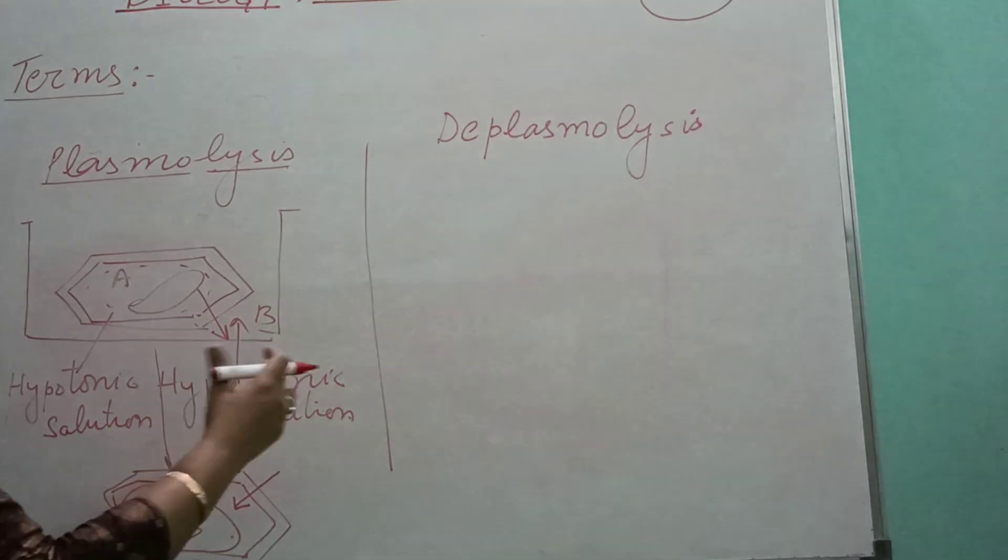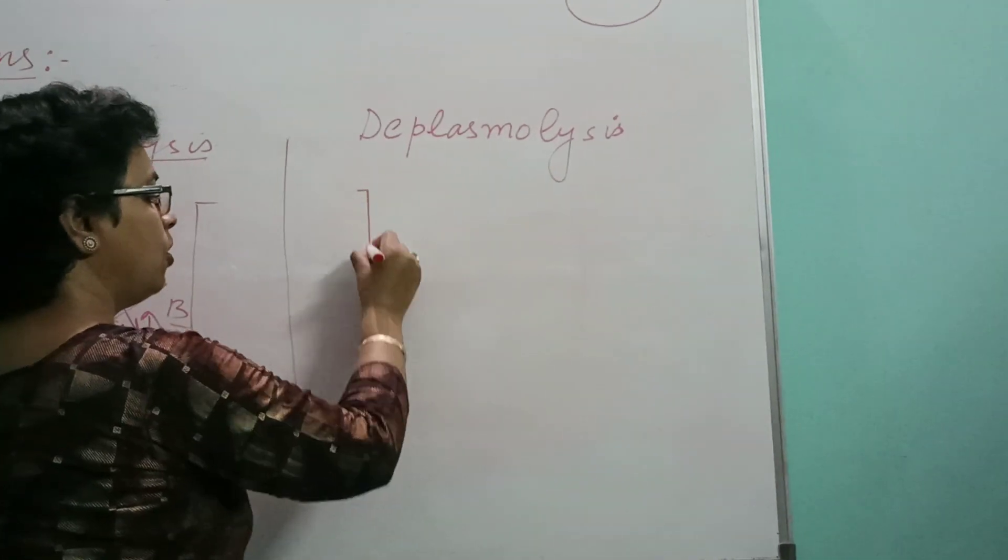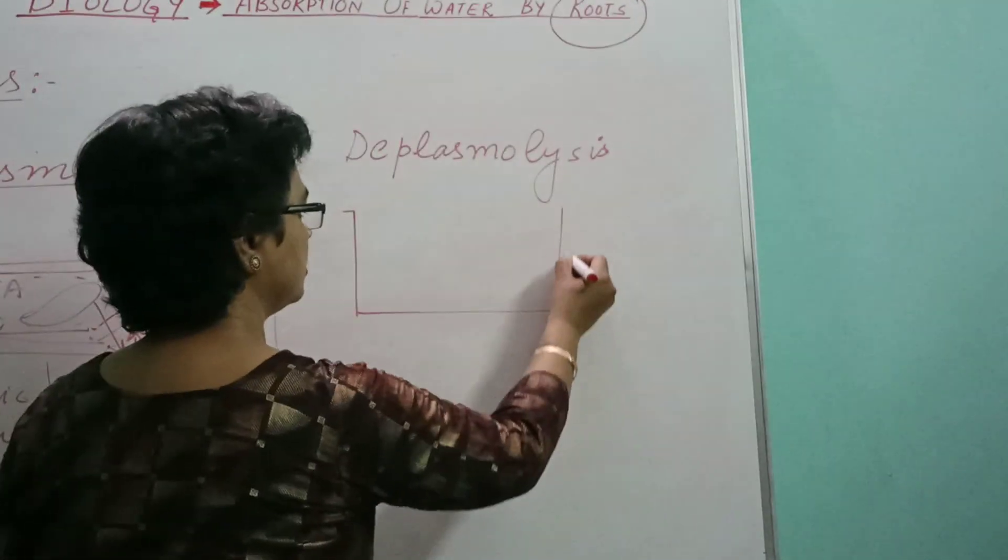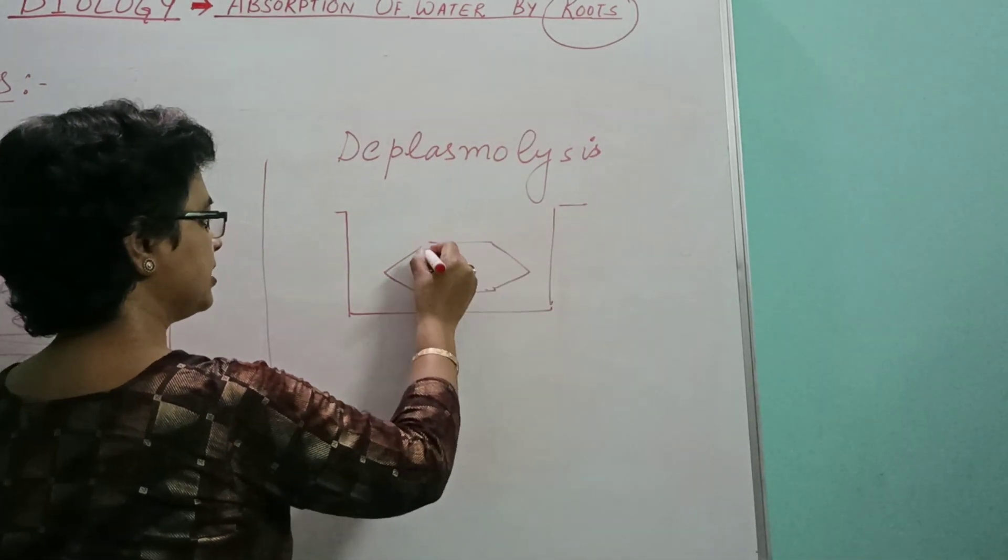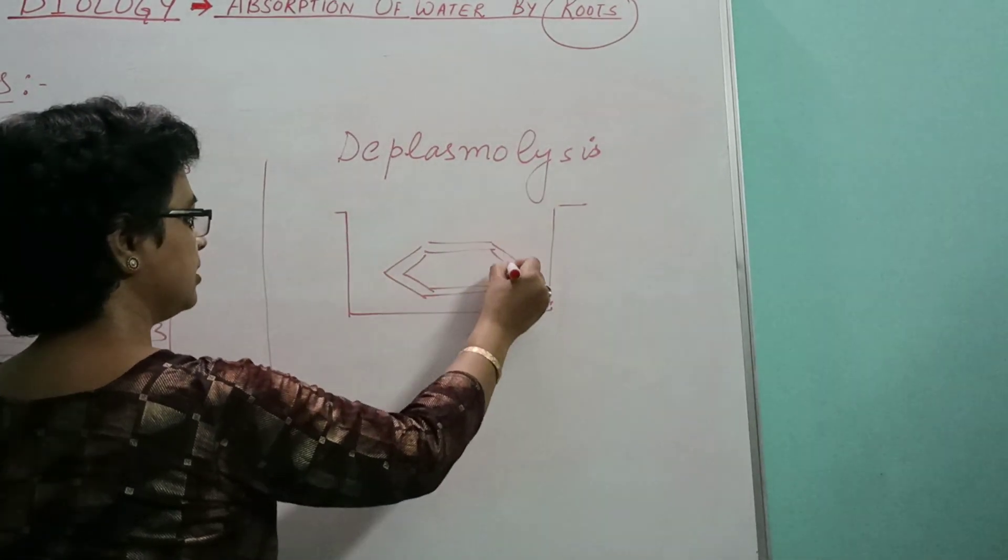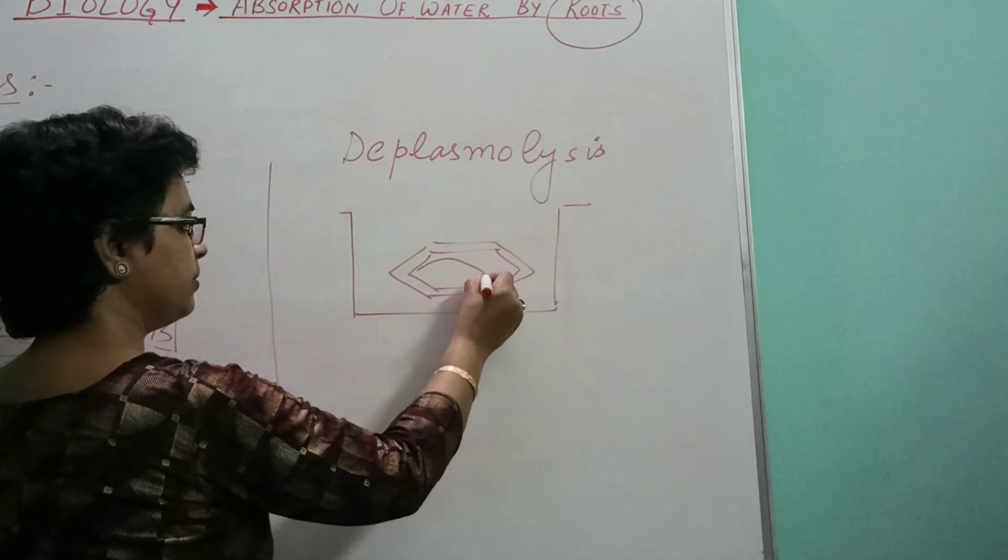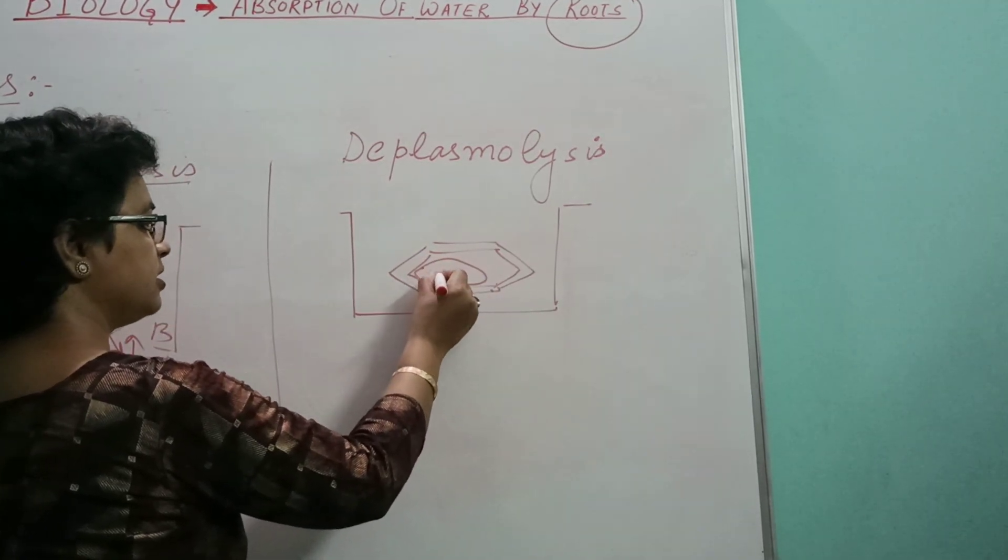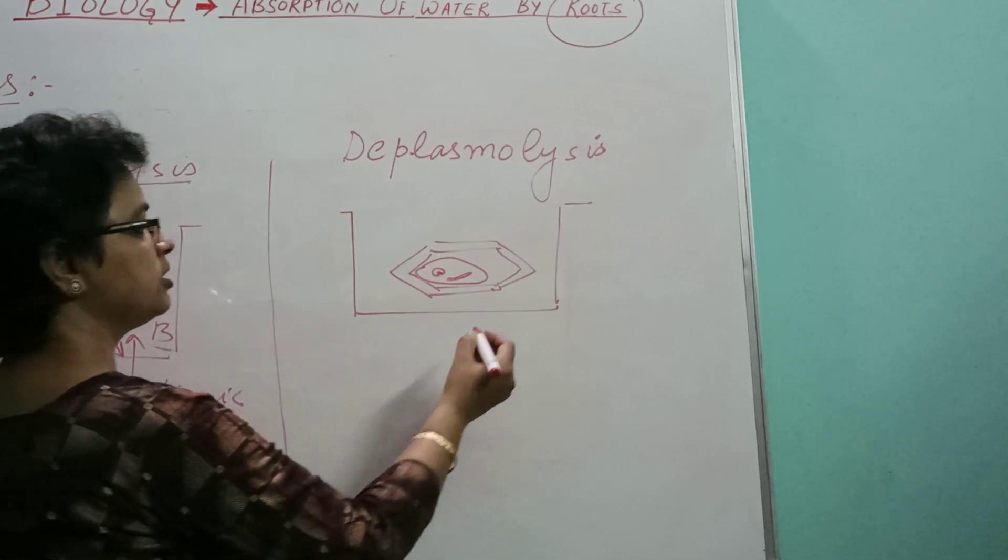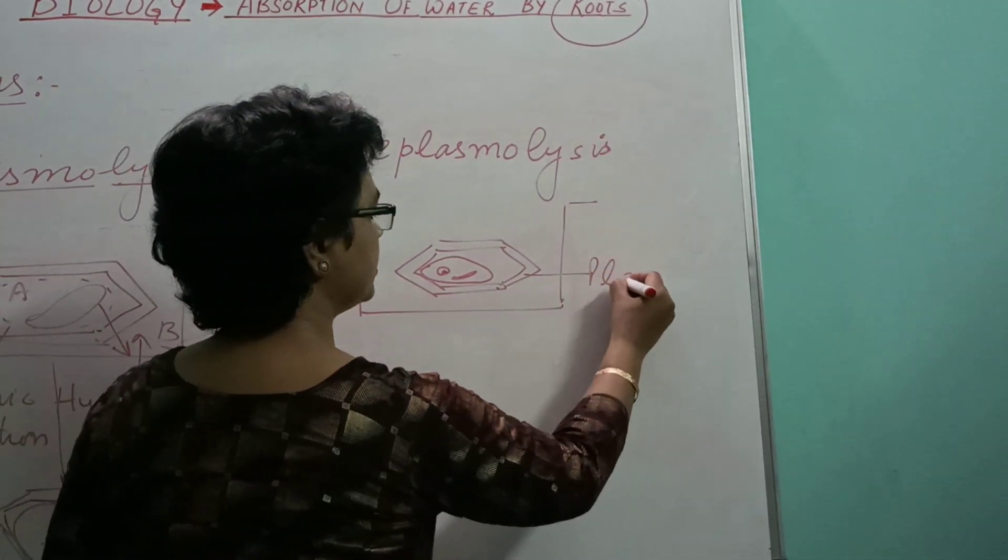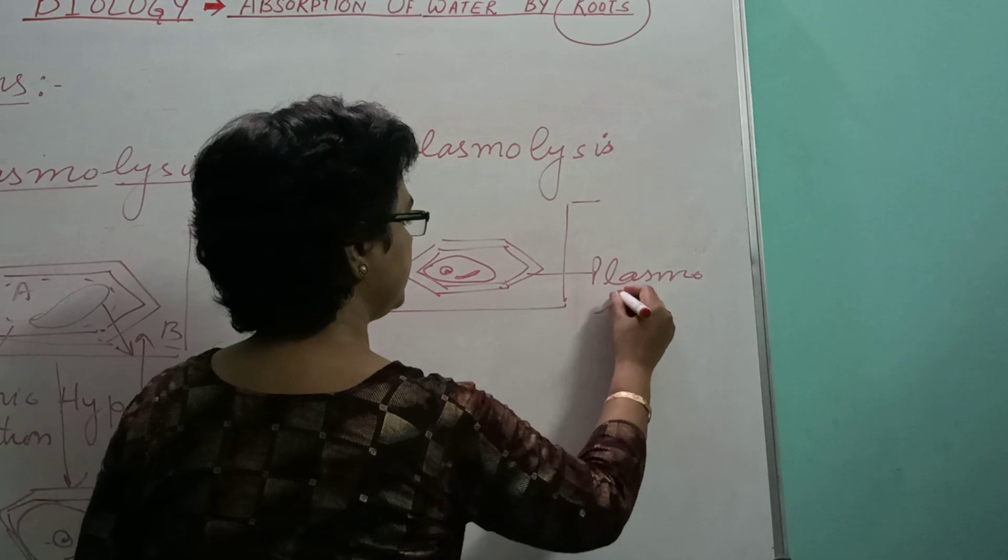Now, this plasmolyzed cell when placed in distilled water or in a hypotonic solution, the cell is in its plasmolyzed state. This is cell wall. Plasma membrane is a little bit shrunk like this one. Nucleus and vacuole are almost disappeared. This is termed as plasmolyzed cell.